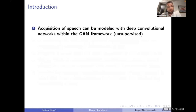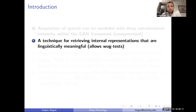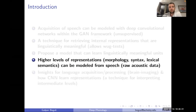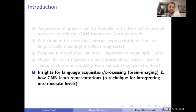A lot of the focus will be on production itself. The main claims: acquisition of speech can be modeled with deep convolutional neural networks within the GAN framework. I'll propose a technique for retrieving internal representations — not only behavior data — that allows me to perform wug-tests on these models, similar to what we do in experimental phonology. I'll propose a new extension of GANs that learns linguistically meaningful information by adding lexical learning to the architecture.